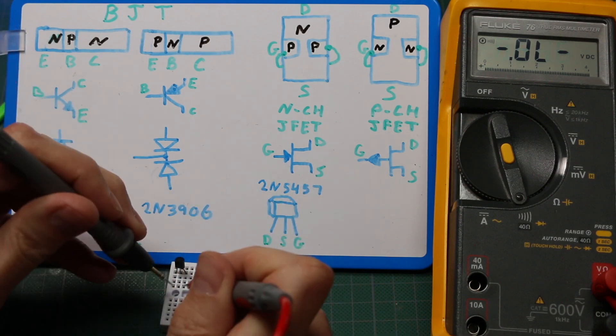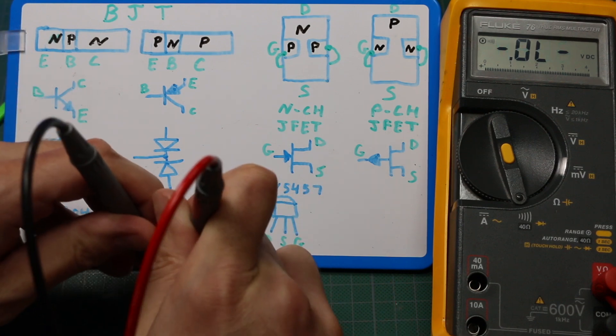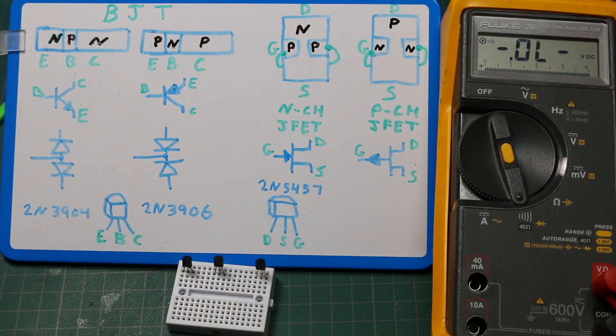And in reverse, no continuity. So that's a good PN junction as well.